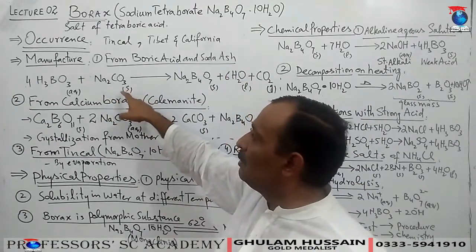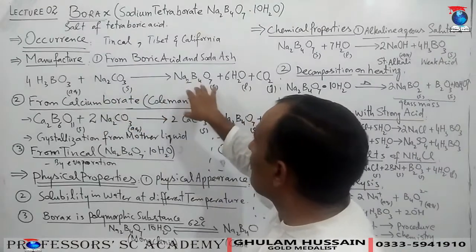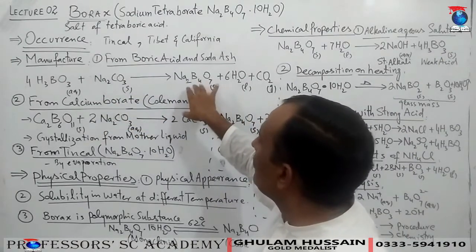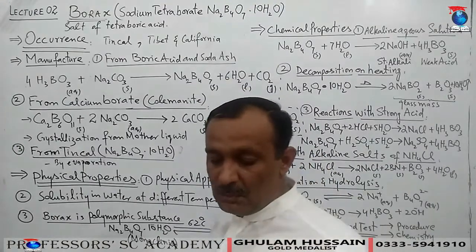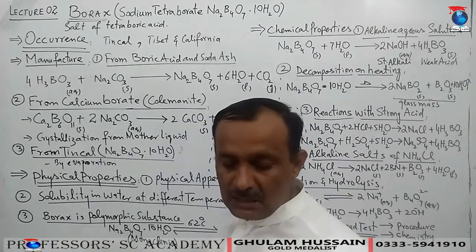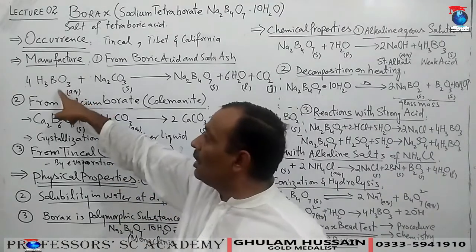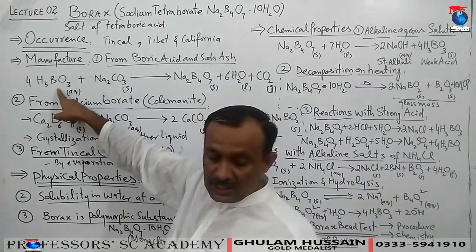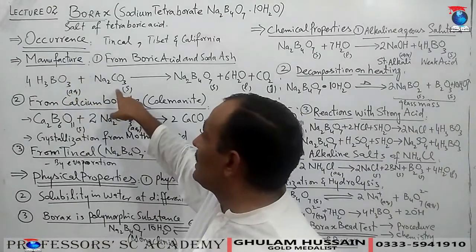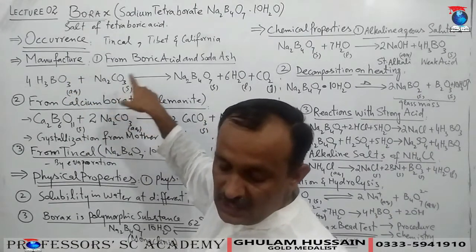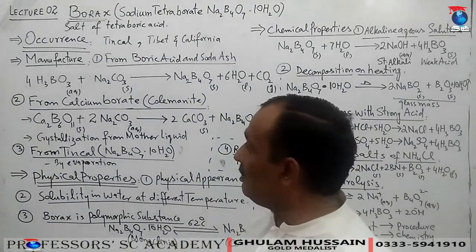Boric acid (H₃BO₃) and sodium carbonate — which we all know is an alkaline salt — when they react together, an alkaline salt is formed. Carbon dioxide is released and borax is produced. As written in the book: manufacturing by treating a hot solution of boric acid with the proper amount of soda ash. Adding solid soda ash gives borax crystals.